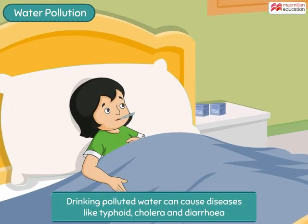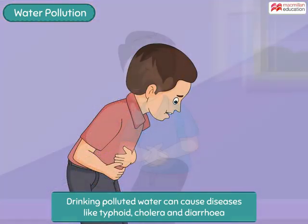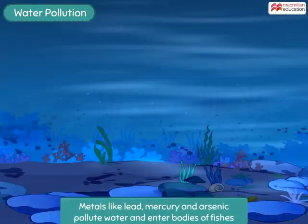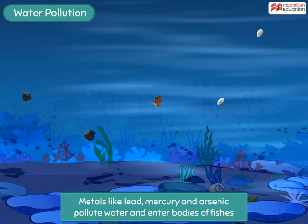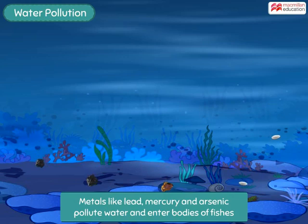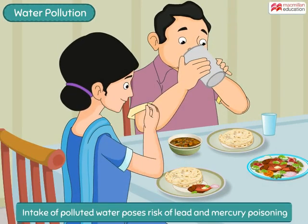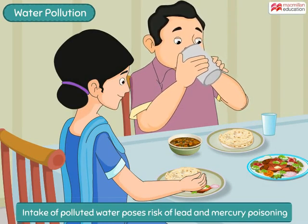Drinking polluted water can cause diseases like typhoid, cholera, and diarrhoea. Metals like lead, mercury, and arsenic present in polluted water enter the bodies of aquatic organisms like fish. When humans drink this water or eat organisms living in such polluted water,